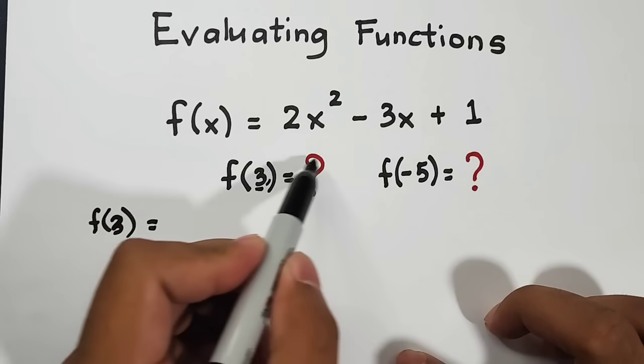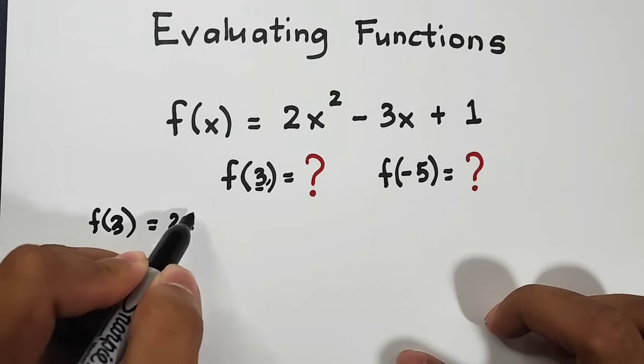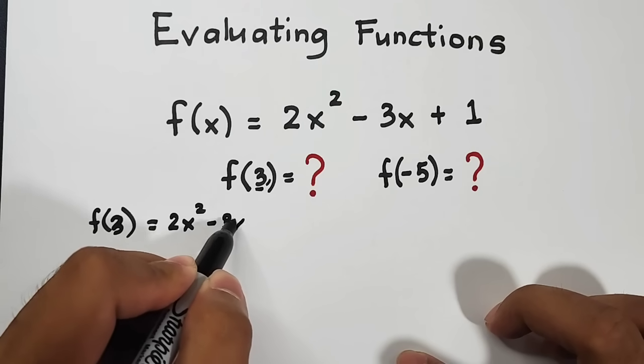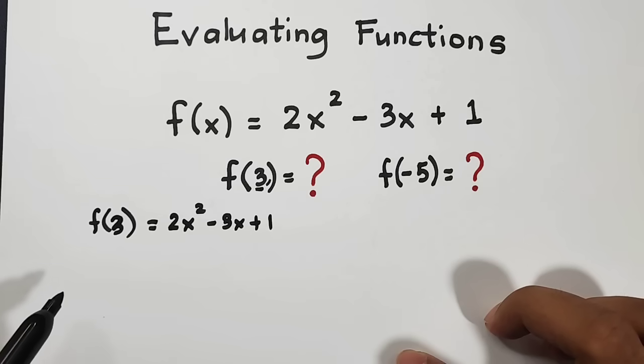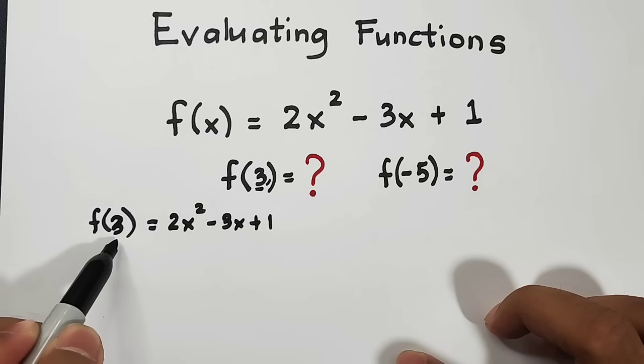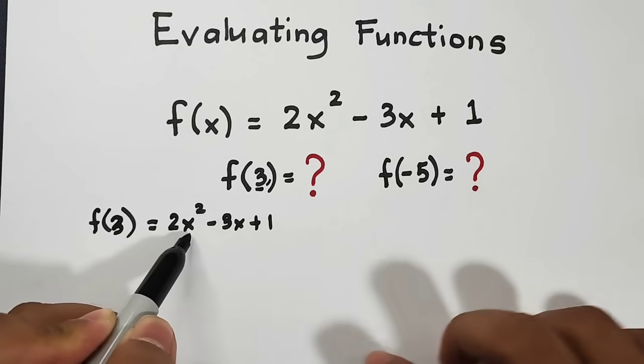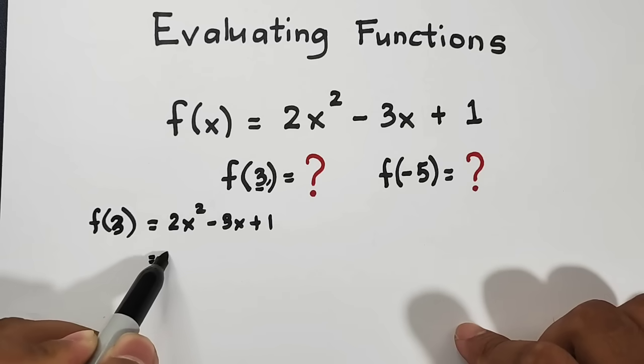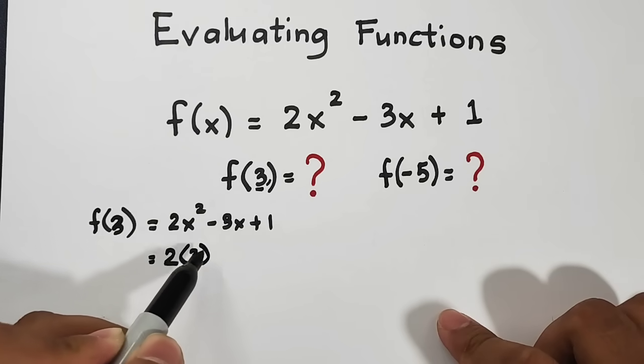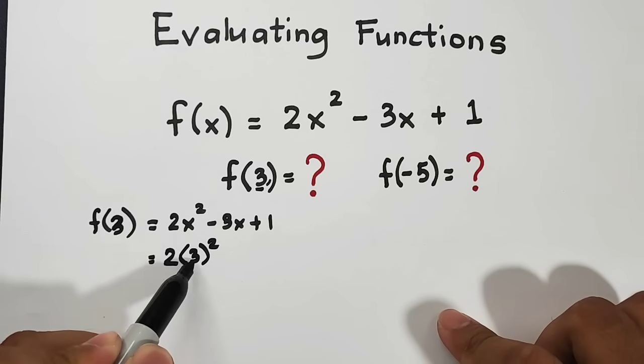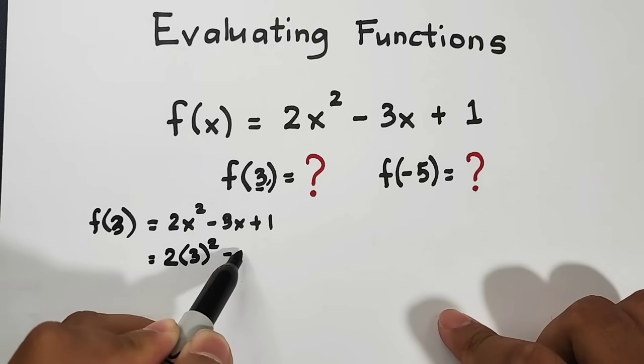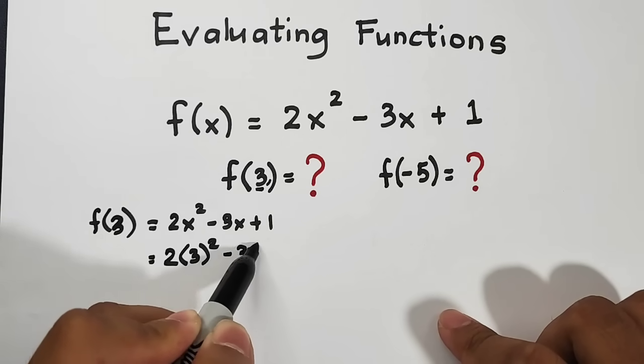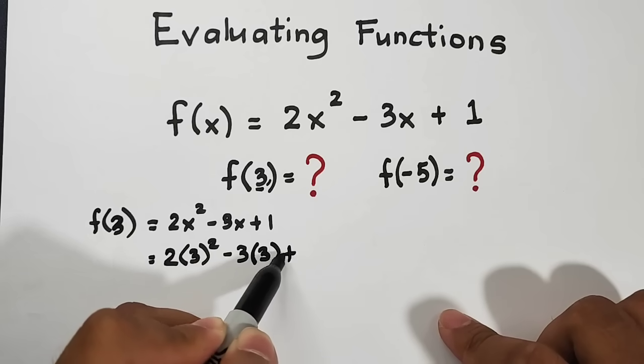f of 3 is equal to your original function 2x squared minus 3x plus 1. Since you replaced x or replaced the x with 3, you will also replace all the x variables here in the given function. So this x will become 2 times 3 squared. The x we replaced with 3 because that is your input, minus 3 and another x variable will be replaced by 3 and then plus 1.